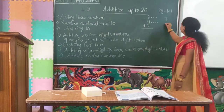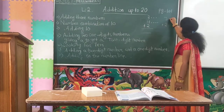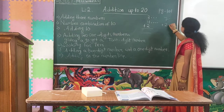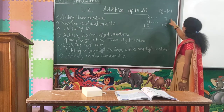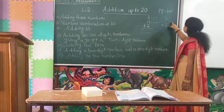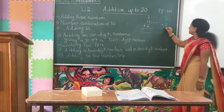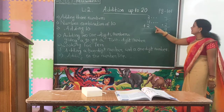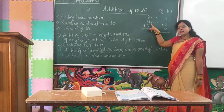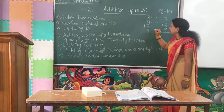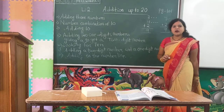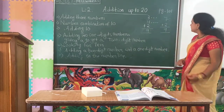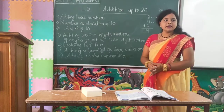Now you have to add the 7 with the 2. 7 means counting 1 through 7, and 2 means 2 more turns. So counting on: 1, 2, 3, 4, 5, 6, 7, 8, 9 — the answer is 9. So 3 plus 4 equals 7, and 7 plus 2 equals 9. That is how you add 3 numbers.